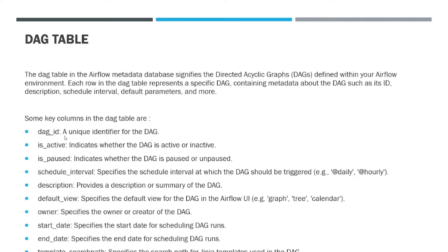Here you can see a few columns. First is dag_id, which is a unique identifier in Airflow. Then is_active, which indicates whether the DAG is active or inactive. is_paused, which indicates whether the DAG is paused or unpaused. schedule_interval, which specifies the interval at which the DAG will run — which could be none, daily, hourly, weekly, monthly, yearly, or any custom schedule interval. Then description, which provides a summary for the DAG. default_view, which specifies the default view of the DAG in the Airflow UI — which could be grid, graph, tree, calendar, and others.